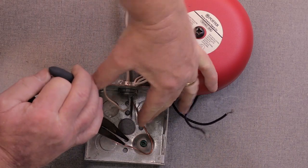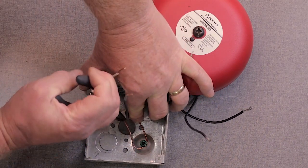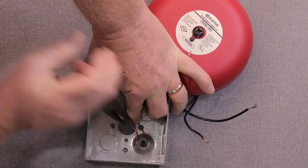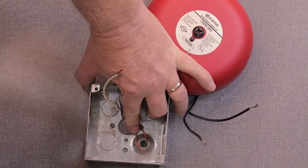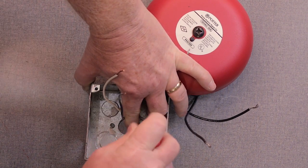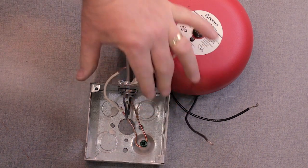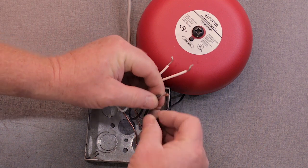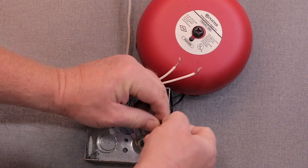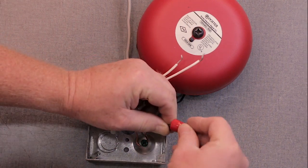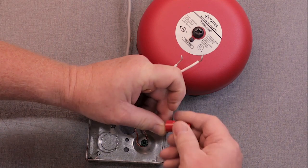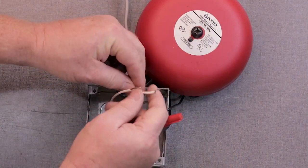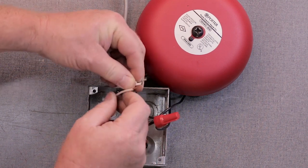Continue the ground wire from the pressure switch to the ground connection on the back box. Connect the black wire from the pressure switch to the black wires on the bell. Connect the white wire from the pressure switch to the white wires on the bell.